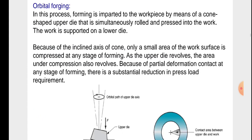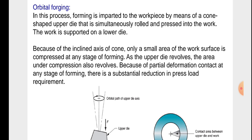Orbital forging: in this process, forming is imparted to the workpiece by means of a cone-shaped upper die that is simultaneously rolled and pressed into the work. The work is supported on the lower die. Because of the inclined axis of the cone, only a small area of the work surface is compressed at any stage of forming. As the upper die revolves, the area under compression also revolves. Because of this partial deformation contact, there is a substantial reduction in press load requirement.